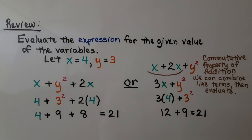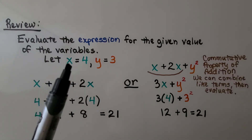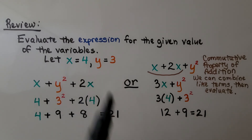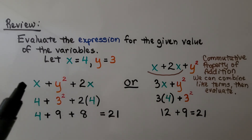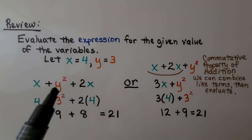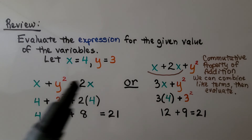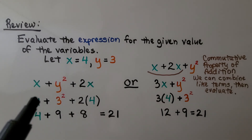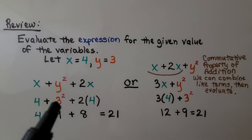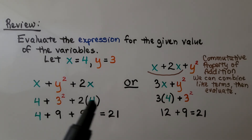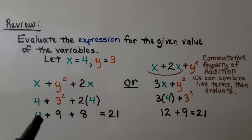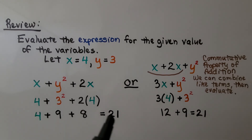Now let's evaluate an expression for given values of two variables. We have x equals 4 and y equals 3. The expression is x plus y raised to the second power, plus 2x. We substitute 4 for x and 3 for y, giving 4 plus 3 raised to the second power, plus 2 times 4. That's 4 plus 9 plus 8, which equals 21.